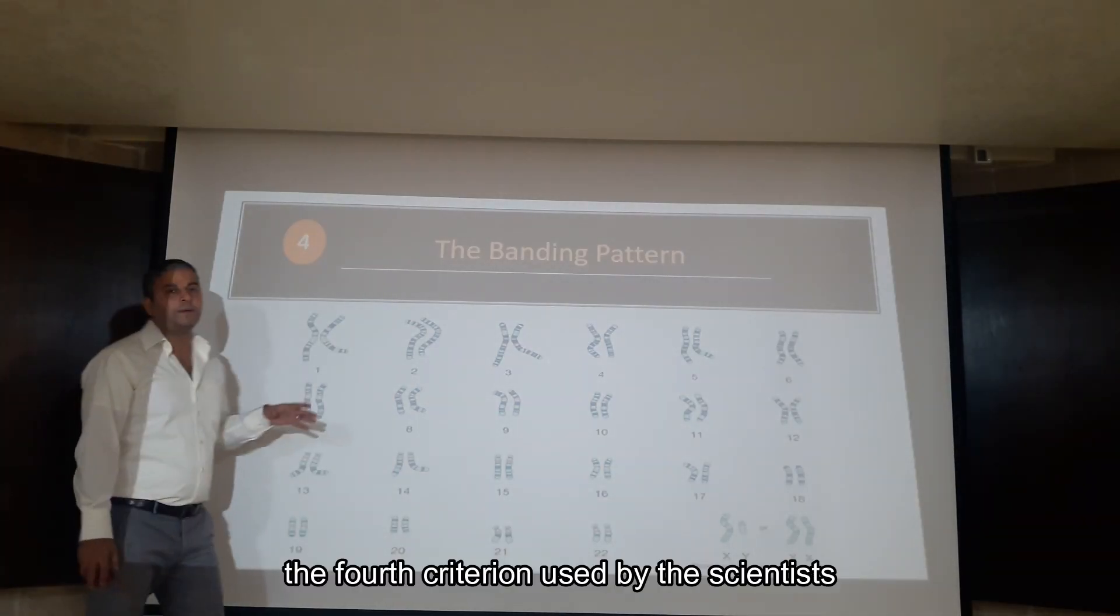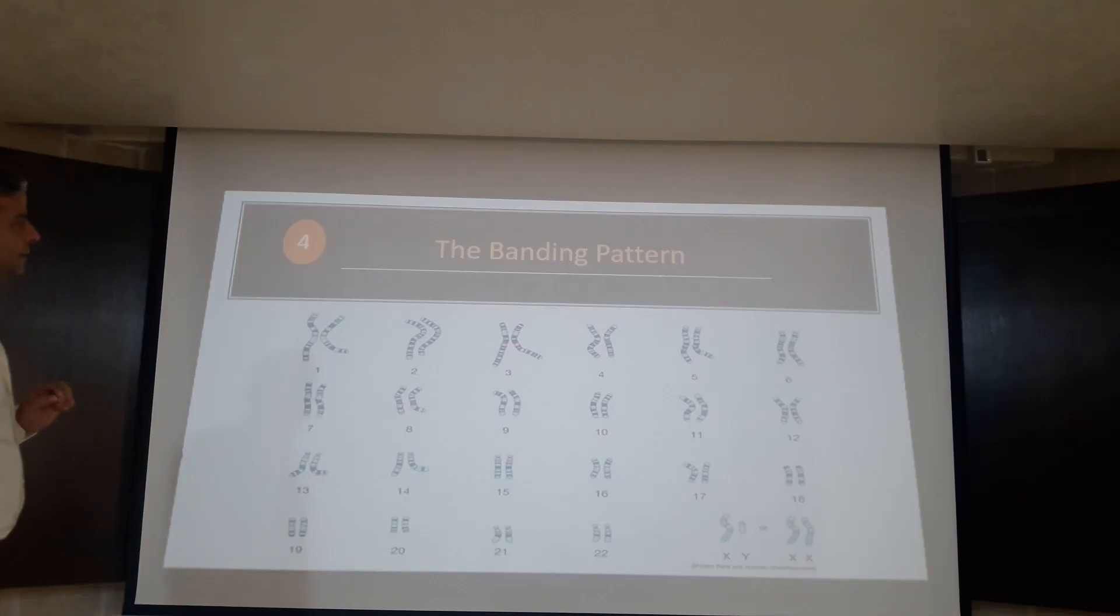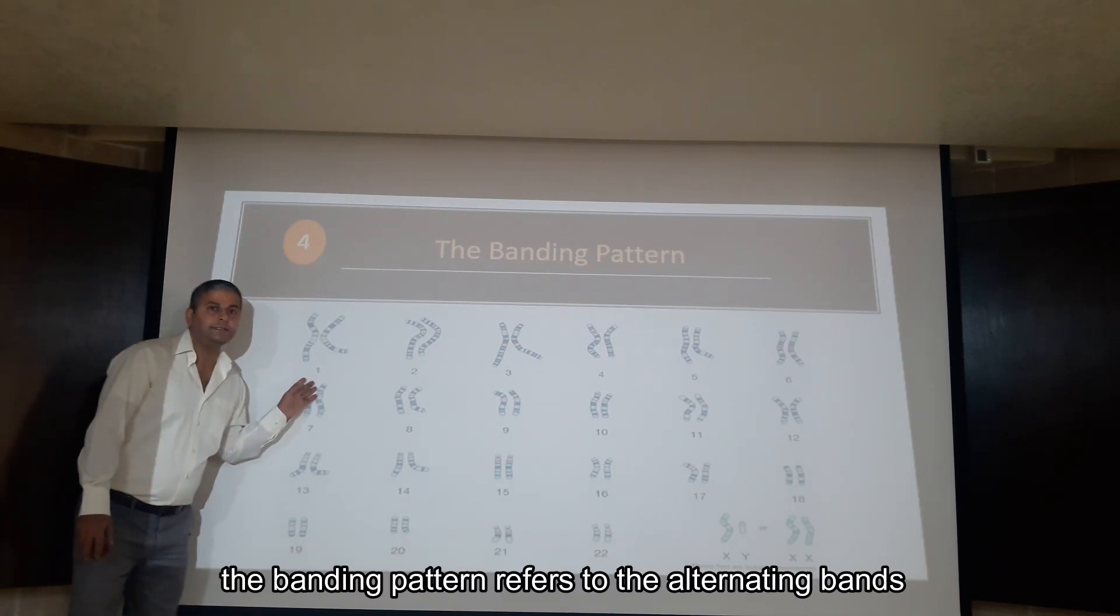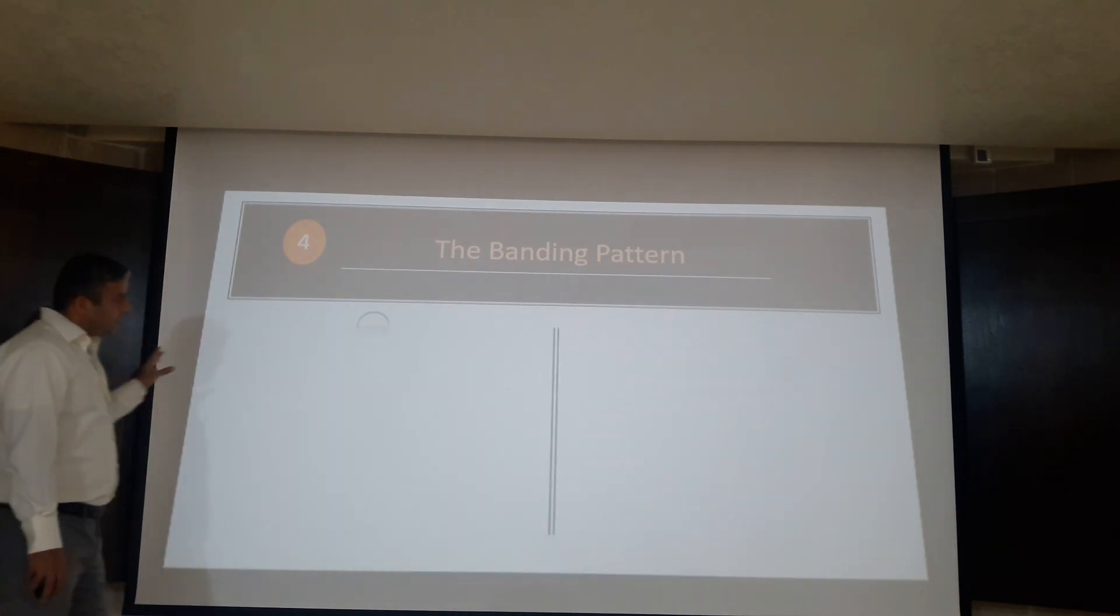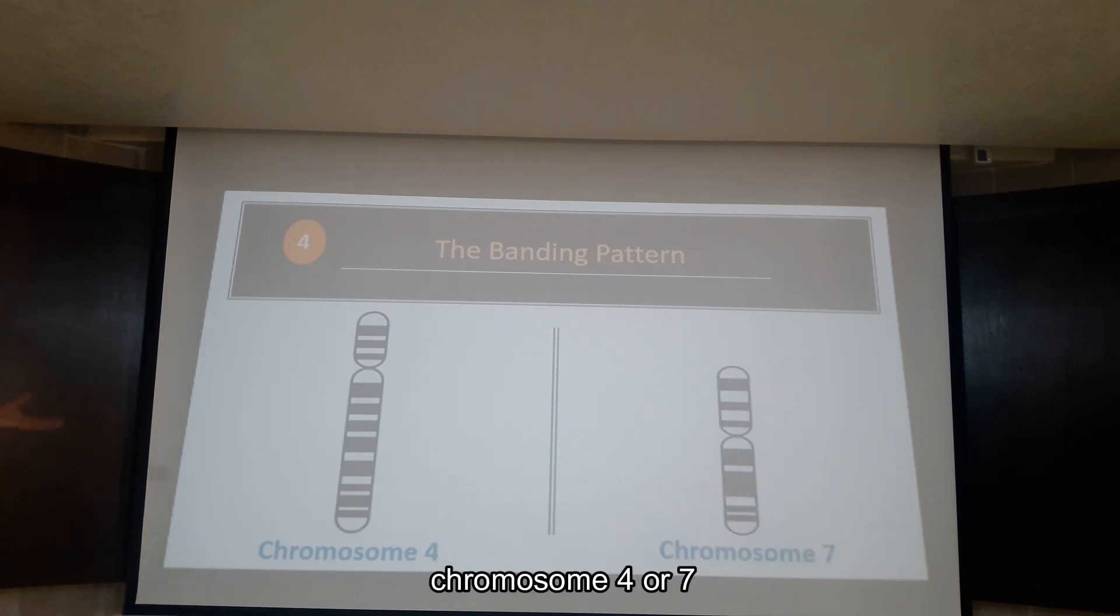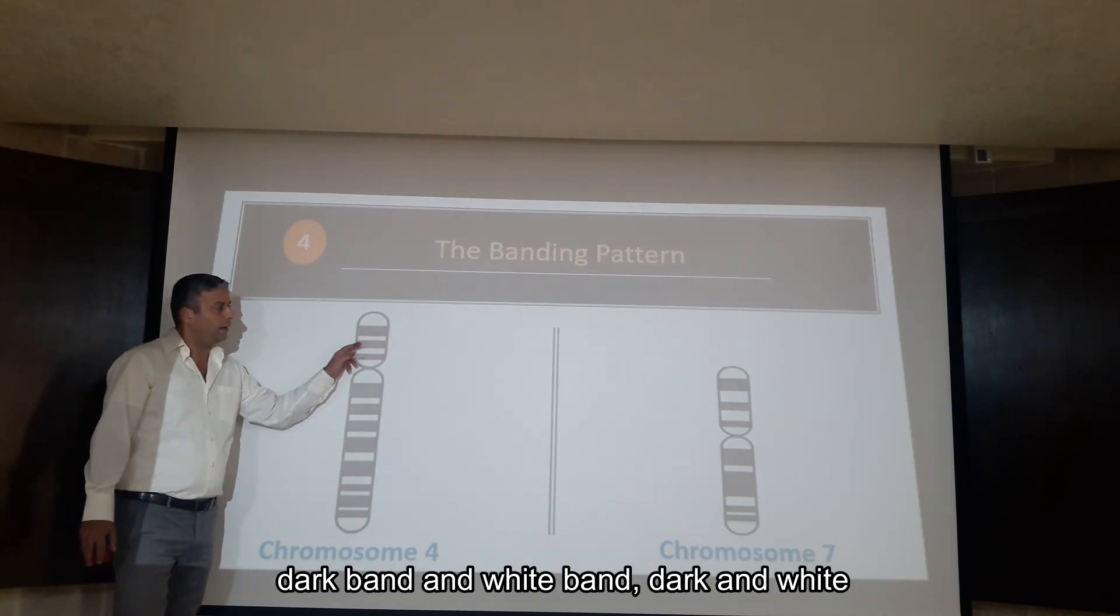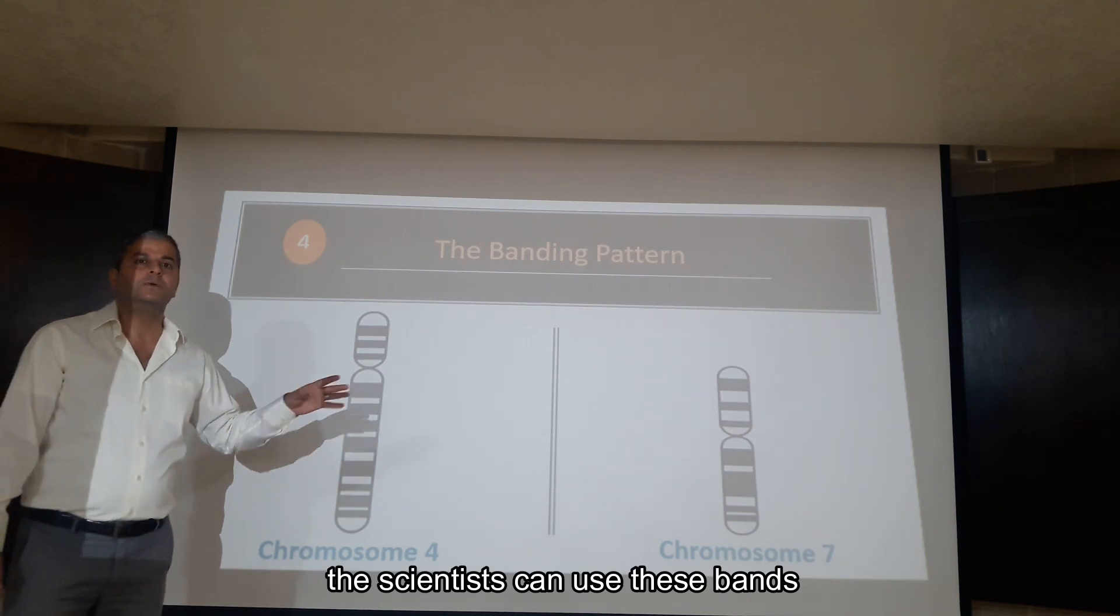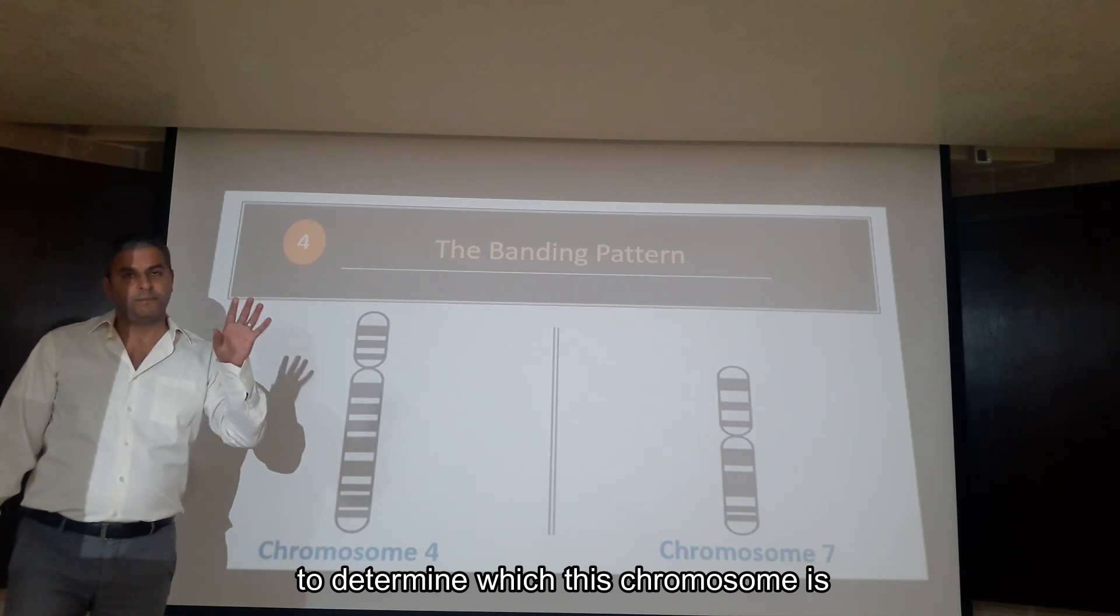The fourth criteria used by scientists to classify chromosomes in a karyotype is the banding pattern. What does this mean? Banding pattern refers to the alternating bands, dark and light, resulting from a staining technique. As you see here, in chromosome 4 or 7, we have dark bands and light bands. So, scientists can use these bands to determine which chromosome this is.